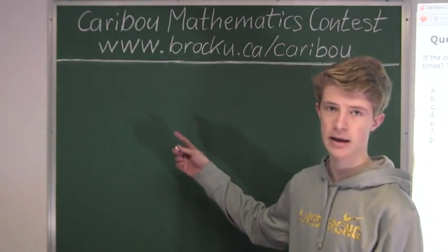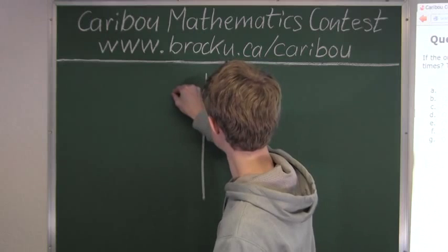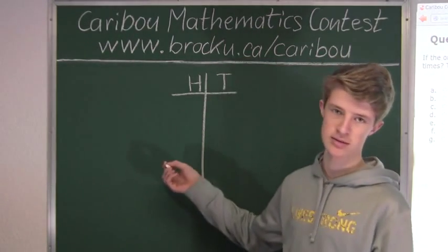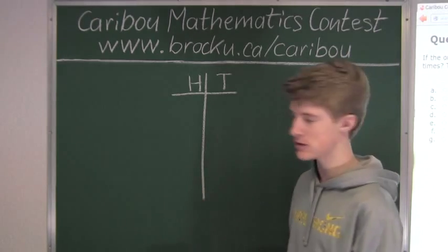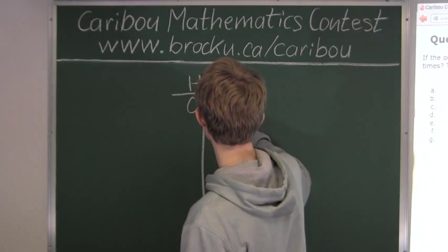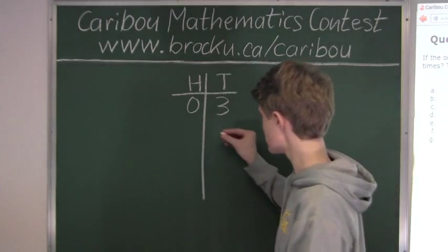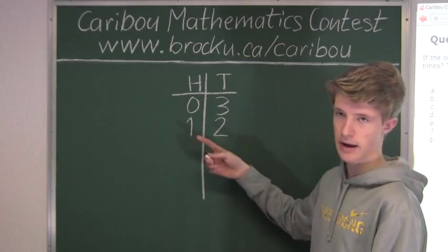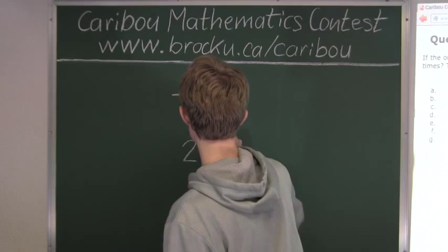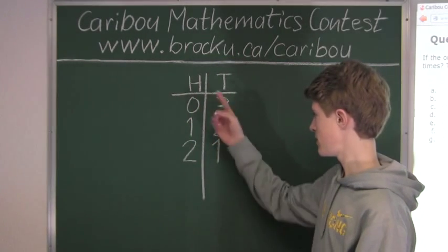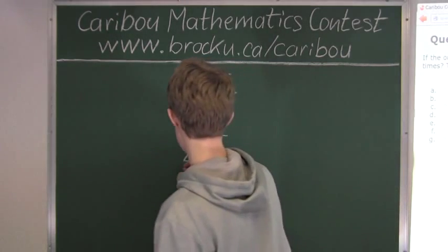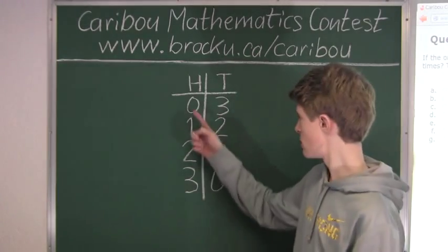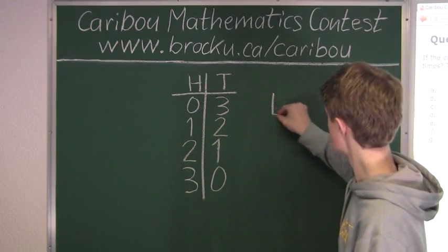So now we will draw a table for the number of heads and tails. We can have zero heads and three tails. Then we know there can be one head and two tails. Then there can be two heads and just one tail. And finally, there can be three heads and no tails. So therefore, there are four possible outcomes — one, two, three, four. The answer is four.